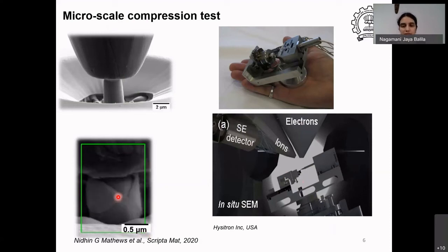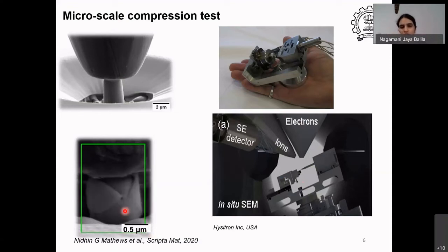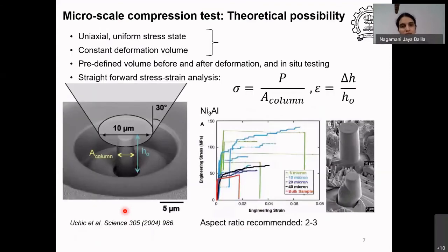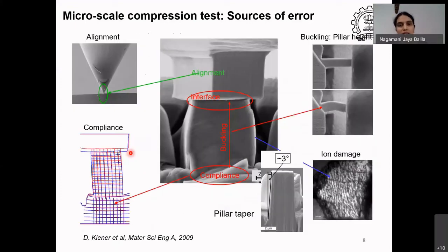You can also collect the data as this material deforms, and you can see that there are bands forming as the material deforms. These uniaxial compression tests are very good to do, and the compression test is preferred because it's easy and you can measure the cross-sectional area and convert it into stress. But there are some problems, and I will quickly talk about the sources of error in the experimental measurement.